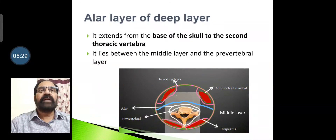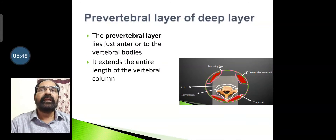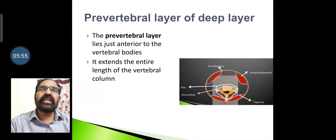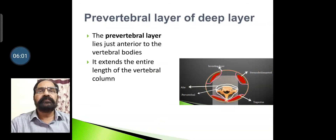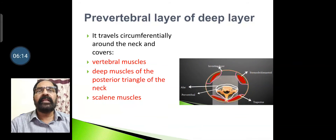The alar layer of the deep layer extends from the base of the skull to the second thoracic vertebra. It lies between the middle pretracheal layer and the pre-vertebral layer, as seen in the diagram. The pre-vertebral layer lies just anterior to the vertebral bodies and extends the entire length of the vertebral column. It travels circumferentially around the neck and covers the vertebral muscles, deep muscles of the posterior triangle of the neck, and scalene muscles.